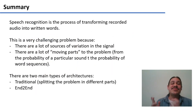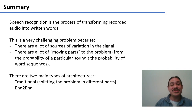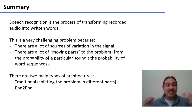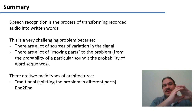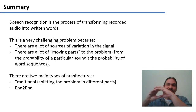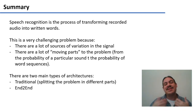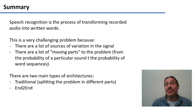In summary, speech recognition is the process of transforming audio into written words. It is very challenging due to many sources of variation — from the probability of a single sound to the probability of word sequences like 'recognized speech.' Because of this complexity, people have traditionally split the problem into pieces: one component handles sounds, one handles word sequences, one matches sound chains to known words, and so on. An alternative is an end-to-end neural architecture that attempts to handle all of these problems simultaneously. In the next video we'll look at the traditional architecture.